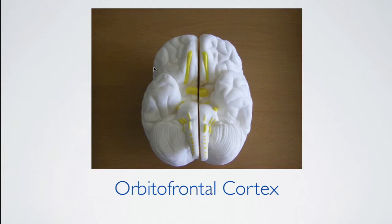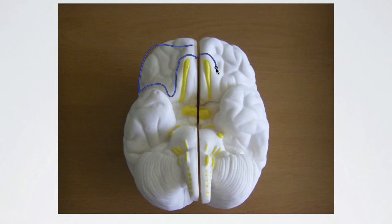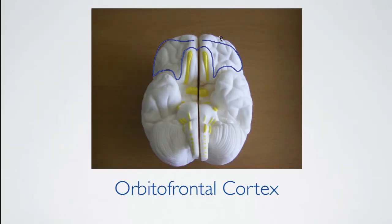Finally, I would like to talk about the orbitofrontal cortex. You will find this if you look at the inferior side of the brain. It would be from here, all around here, around the temporal lobes, and around the olfactory bulb — and the same on the other side: around the olfactory bulb, around the temporal lobe, and back up. The most frontal part here belongs to the dorsolateral prefrontal cortex, so that is excluded from the orbitofrontal cortex.